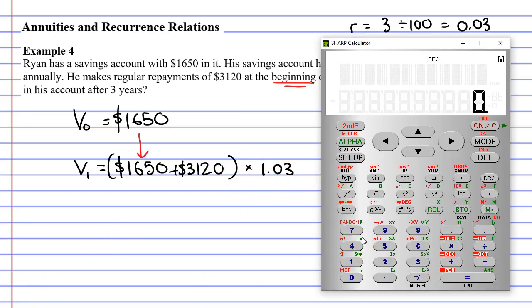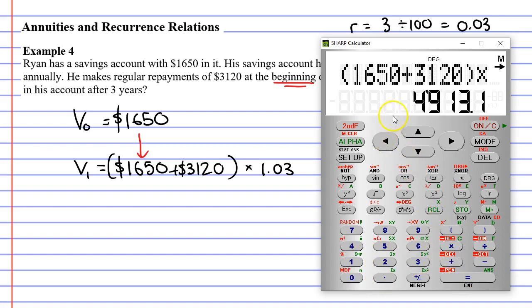Let's work this out on the calculator. So we go brackets, 1,650 plus 3,120, close our brackets and multiply this by 1.03. So by the end of the first year, we've got $4,913.10.